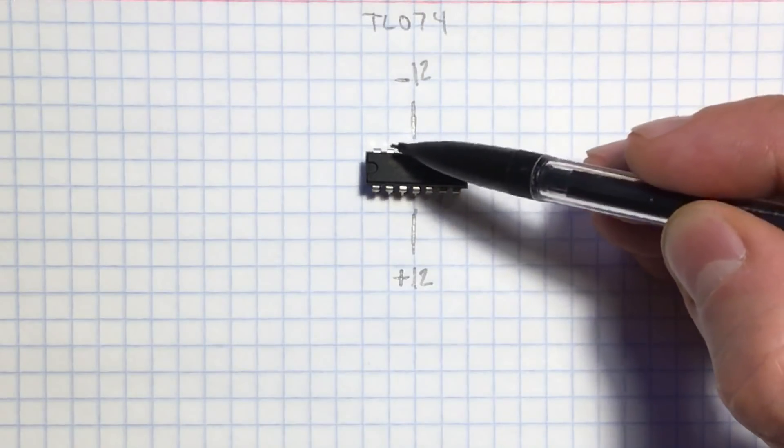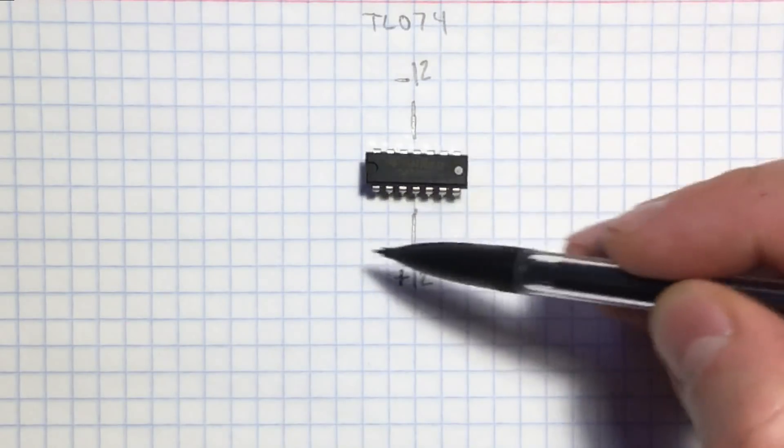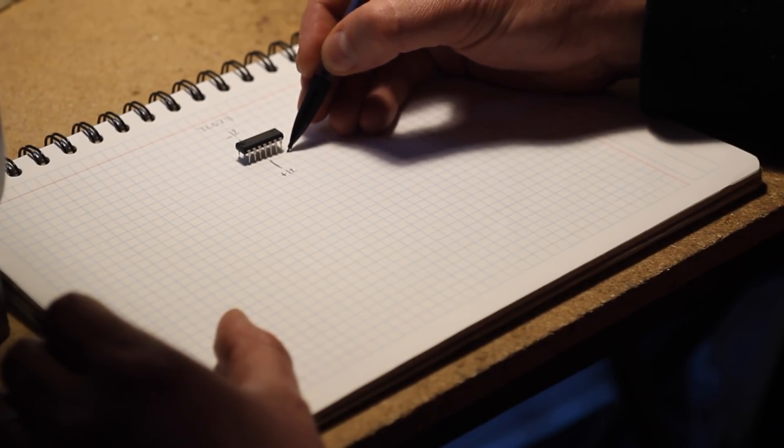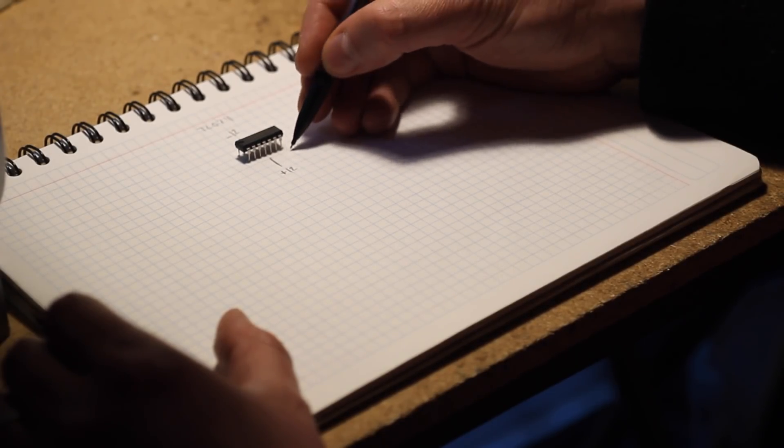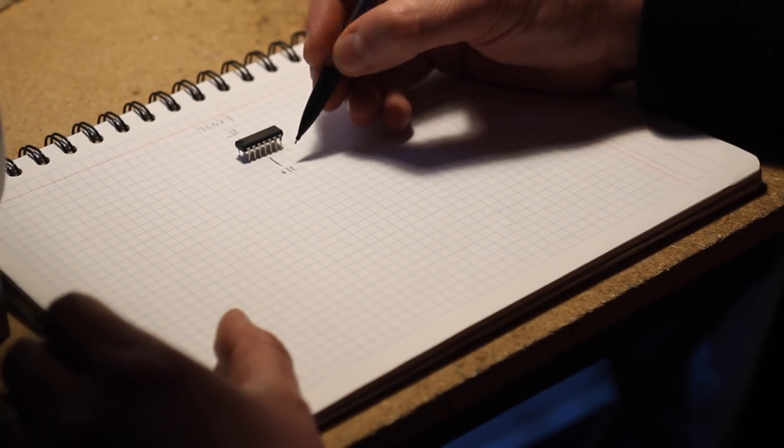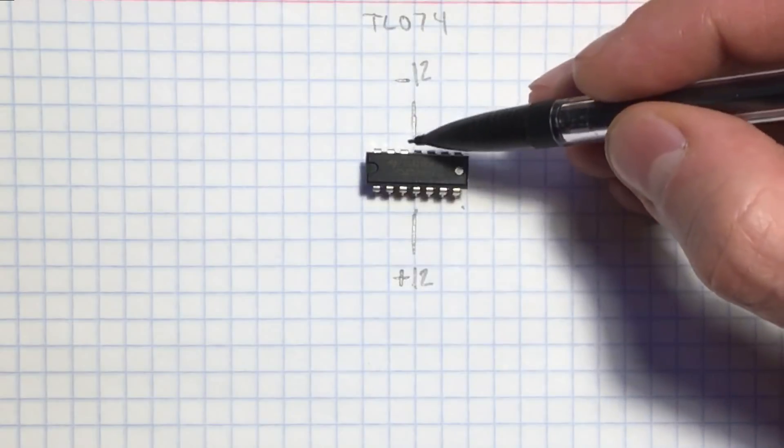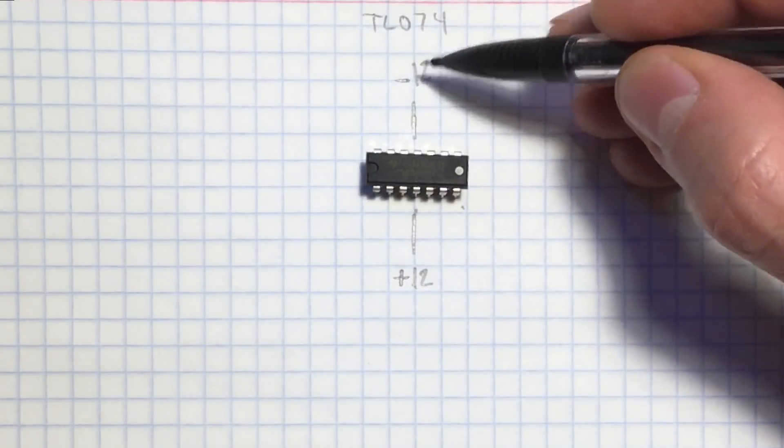8, 9, 10, 11, 12, 13, 14. It's a 14 pin chip and the way it's arranged is very intuitive as well. It's easy to memorize so you can work with it. Aside from pin 4 being the positive rail and pin 11 being the negative rail,